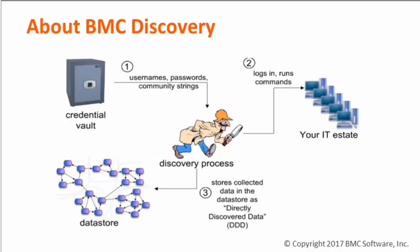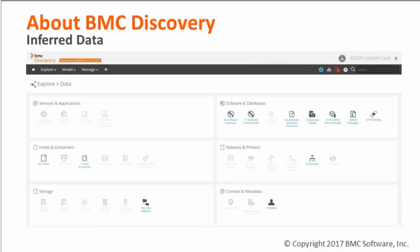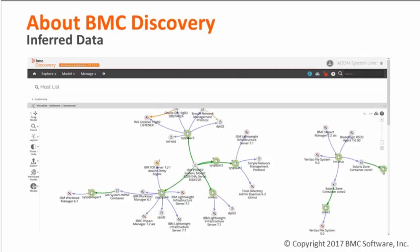The discovery process uses credentials from the vault to log into target systems, run commands, and retrieve directly discovered data, which it stores in its local data store. The directly discovered data is used internally by Discovery's reasoning engine to create or update inferred data. Hosts, network devices, and software instances are typical examples of inferred data, seen here in a visualization — the information likely of most interest to most users. Through regularly scheduled discovery runs, it is kept updated and current. Discovery then offers seamless integration into Remedy CMDB with out-of-the-box continuous data synchronization. The inferred data is what is used as a source for the CMDB synchronization to populate the discovery data set in the CMDB.